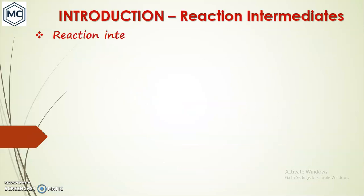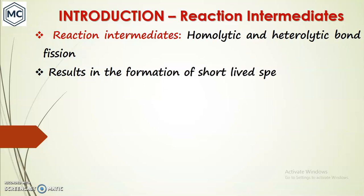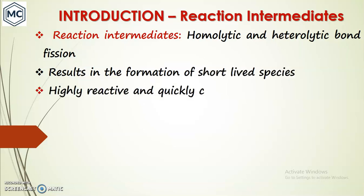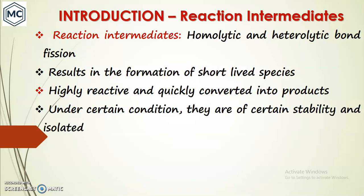So what is a Reaction Intermediate? A Reaction Intermediate is usually obtained either by homolytic or heterolytic bond fission. Due to this fission, it results in the formation of very short-lived species. These short-lived species are highly reactive and quickly converted into products, though under certain conditions they have some stability and can be isolated.